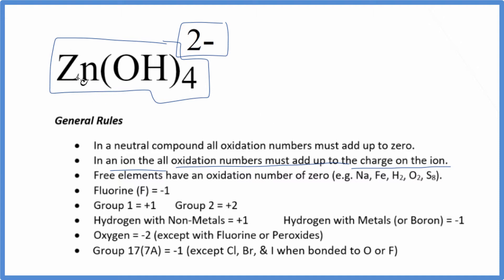Zinc, we don't know here. Zinc is normally 2 plus, but we're going to say we don't know it here. Oxygen, that's going to be minus 2. It's almost always minus 2. And the hydrogen, since it's bonded to oxygen, which is a non-metal, hydrogen is going to be plus 1.